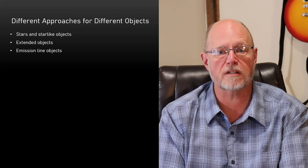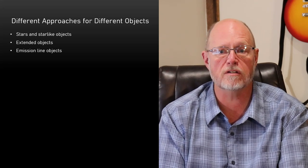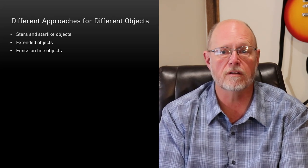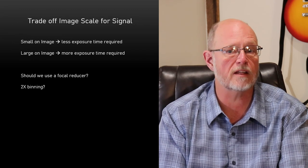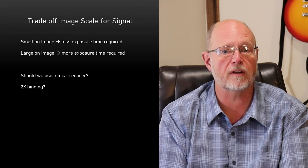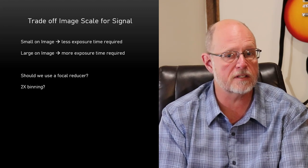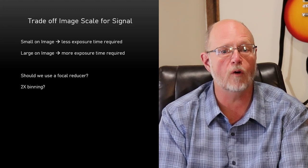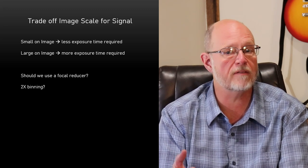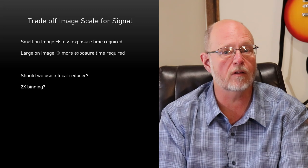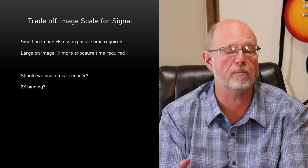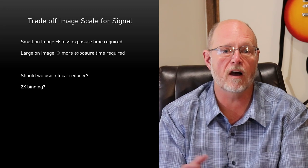For extended objects such as galaxies, H2 regions, supernova remnants, reflection nebulae, and comets, there's a trade-off between image scale and signal. If it only covers a few pixels, it won't make for a very interesting image, but the signal will be shared between only a few pixels. At higher image scale, more detail will be available, but the signal is spread out over so many pixels that it may be difficult or even impossible to obtain a high-quality image.